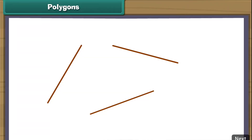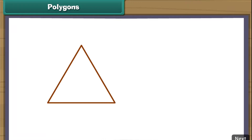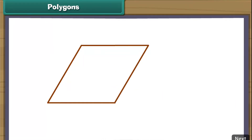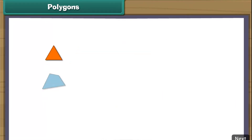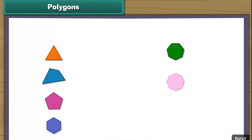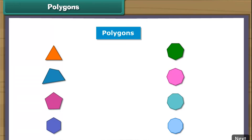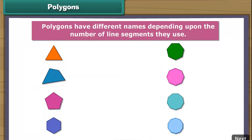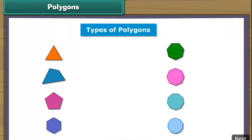Polygons. We can form different shapes by enclosing them with line segments on all sides. Such closed figures are known as polygons. Polygons have different names depending upon the number of line segments they use. Here we look at the following types of polygons.